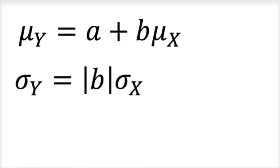What that allows you to do is use these two equations. So the mean of this transformed probability distribution is now a plus b times the mean of the original probability distribution.